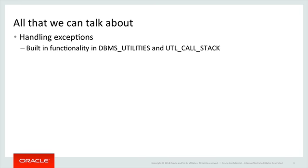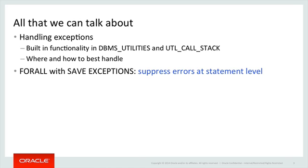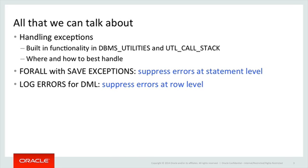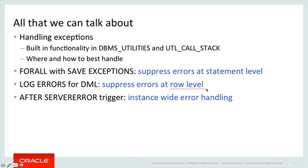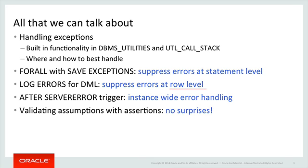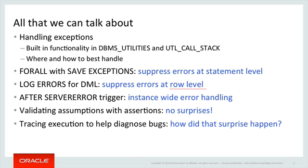We'll touch on handling exceptions and look at the built-in functionality in DBMS_UTILITY and UTL_CALL_STACK — where and how to best handle exceptions. We'll touch on FOR ALL with SAVE EXCEPTIONS, suppressing errors at the statement level. I'll make sure you know about LOG ERRORS for DML, which allows you to suppress errors at the row level. I'll touch on the AFTER SERVERERROR trigger, which offers instance-wide error handling. And moving away from built-in features, I want to talk about validating assumptions using assertion routines, and tracing execution of your code to make it easier to diagnose bugs.